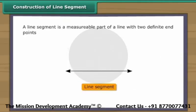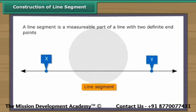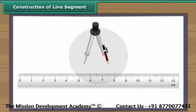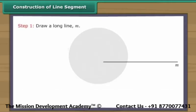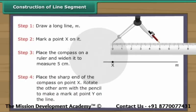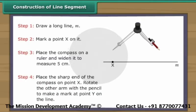Construction of line segment. A line segment is a measurable part of a line with two definite endpoints. We use a ruler and a compass to construct a line segment. Let us construct a line segment five centimeters long. Draw a long line M and mark a point X on it. Place the compass on a ruler and widen it to measure five centimeters. Place the sharp end of the compass on point X.